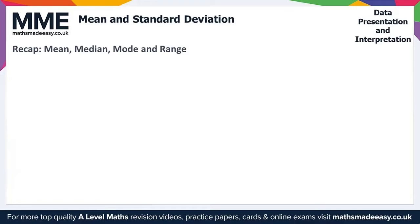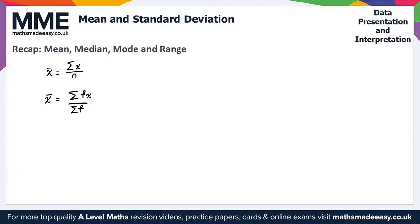There's some notation we need to be aware of for the mean. The mean is often written as x-bar, that's x with a little bar above it, and the notation we use is sigma x — the sum of x values — divided by n, where x is each data point. Another way we can express the mean is x-bar equals sigma fx over sigma f, where x represents a data value and f is the frequency of that data value. So that gives everything we need to recap the mean, median, mode and range.